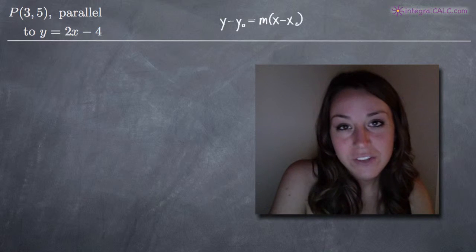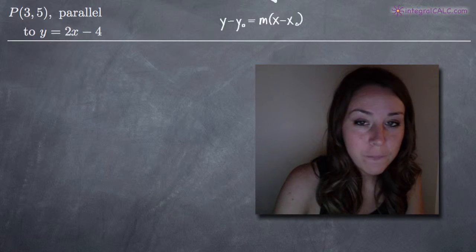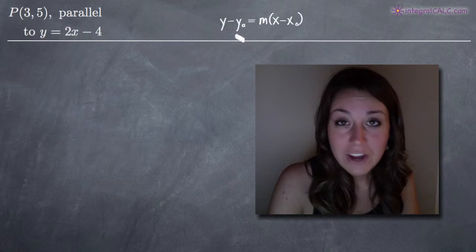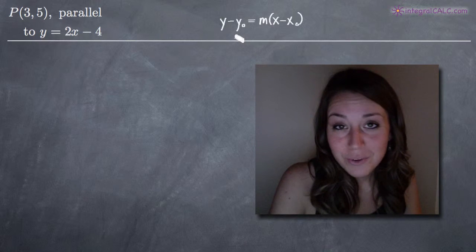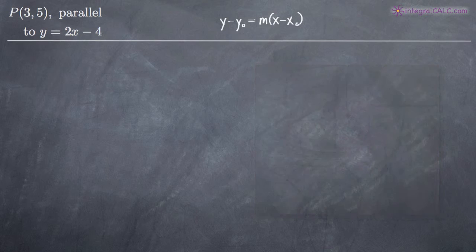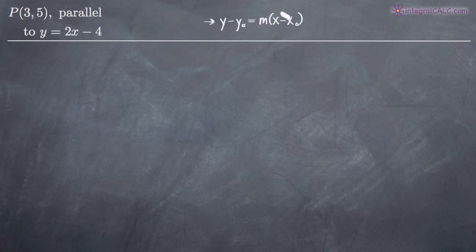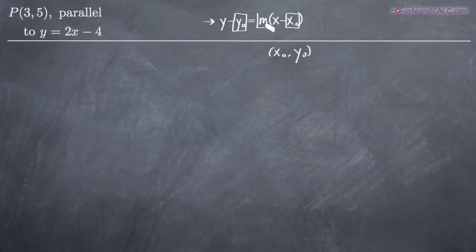Today we're going to be talking about how to write the equation of a line in point-slope form. As the name suggests, in order to write an equation in point-slope form, you need two things. The first one is a point, the second one is the slope. This is the format of the equation for a line in point-slope form. The point is made up of x sub-zero and y sub-zero, and the slope is m. We leave the other variables, x and y, alone in the equation.